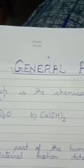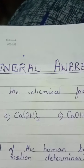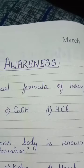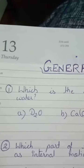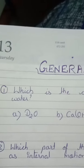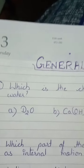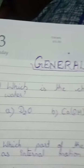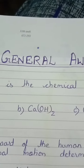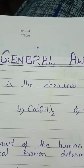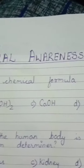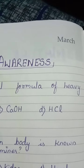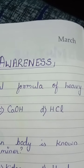Which is the chemical formula of heavy water? Options: D2O, CaOH2, CaOH, DHCL.